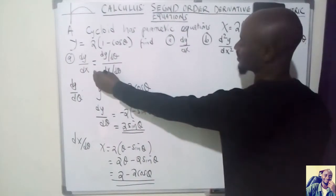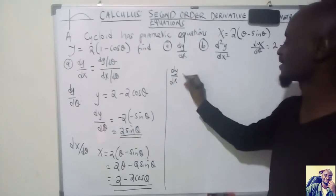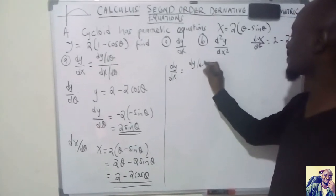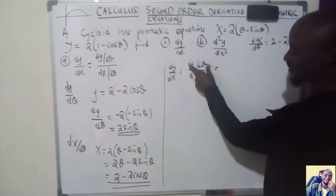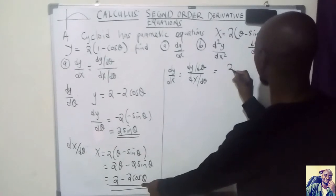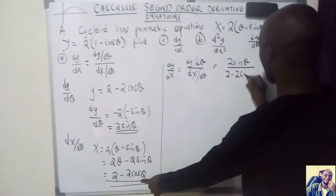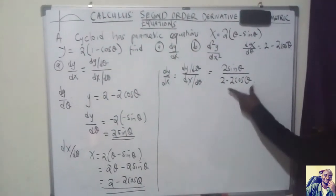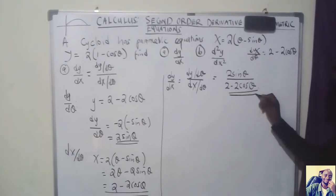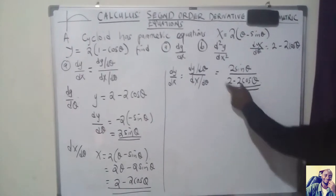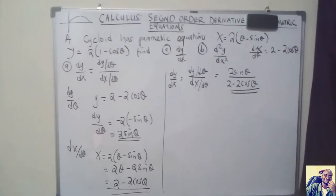Now we come to what we are looking for: dy over dx. We know that dy over dx equals dy with respect to theta over dx with respect to theta. So what we have on top is 2 sine theta, and what we have on the bottom is 2 minus 2 cos theta. This gives us dy over dx equals 2 sine theta divided by 2 minus 2 cos theta, which is our first derivative.